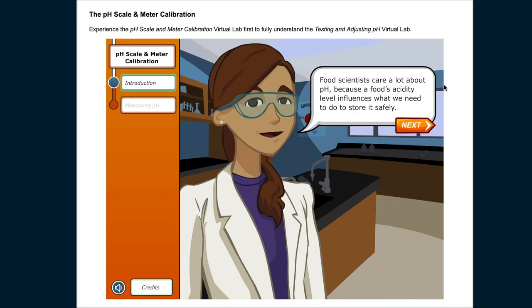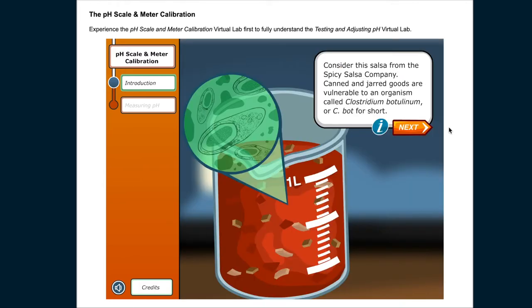Food scientists care a lot about pH because a food's acidity level influences what we need to do to store it safely. Consider this jar of salsa from the Spicy Salsa Company. Canned and jarred goods are vulnerable to an organism called Clostridium botulinum, or C. bot for short.